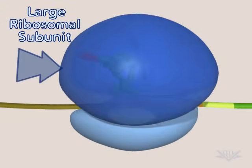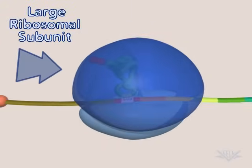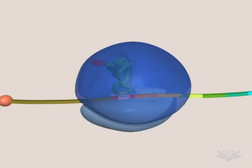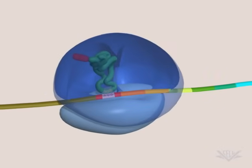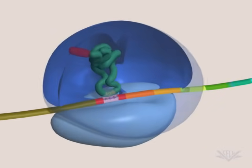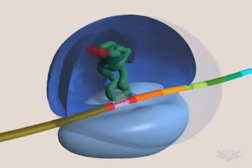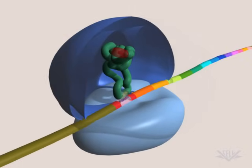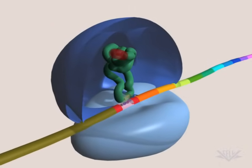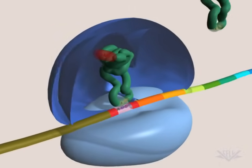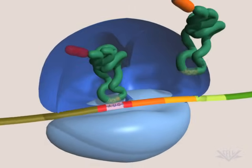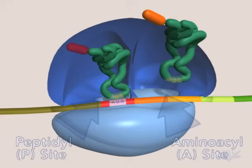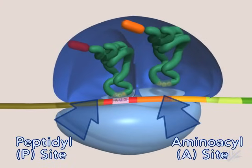The large subunit of the ribosome now binds to create the peptidyl, or P-site, and the aminoacyl, or A-site. The first tRNA occupies the P-site.